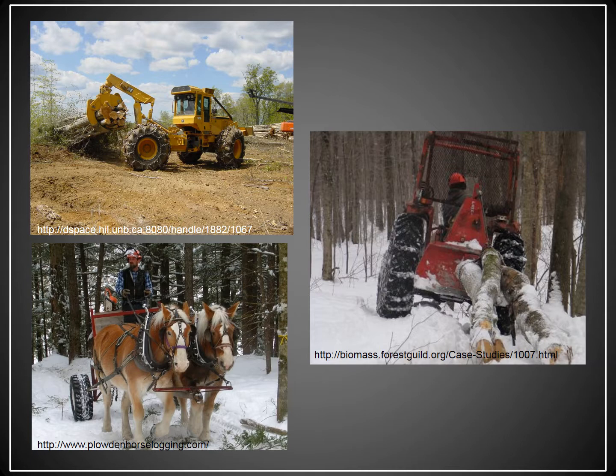The cable skidder is a great way to keep a machine on a designated skid trail — you drag the cable out to the tree, attach it, and winch it back to the machine. The bottom left shows another horse logging operation: John Plowden, who operates in western Maine, is another example of skidding with horses. In the southeastern United States, the grapple skidder — a high-production machine — is the most commonly used skidding method.